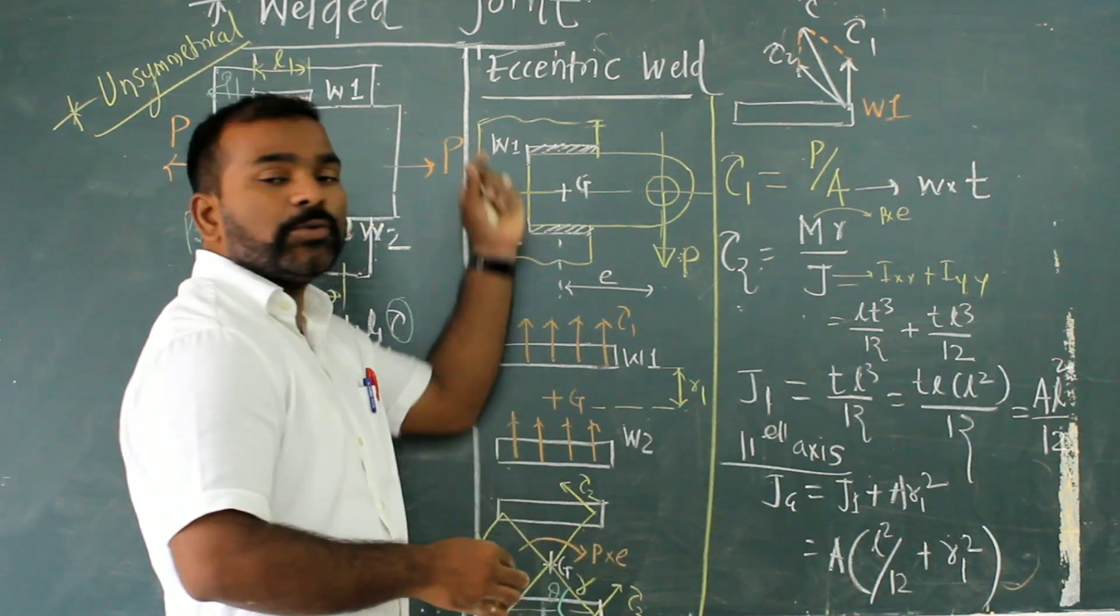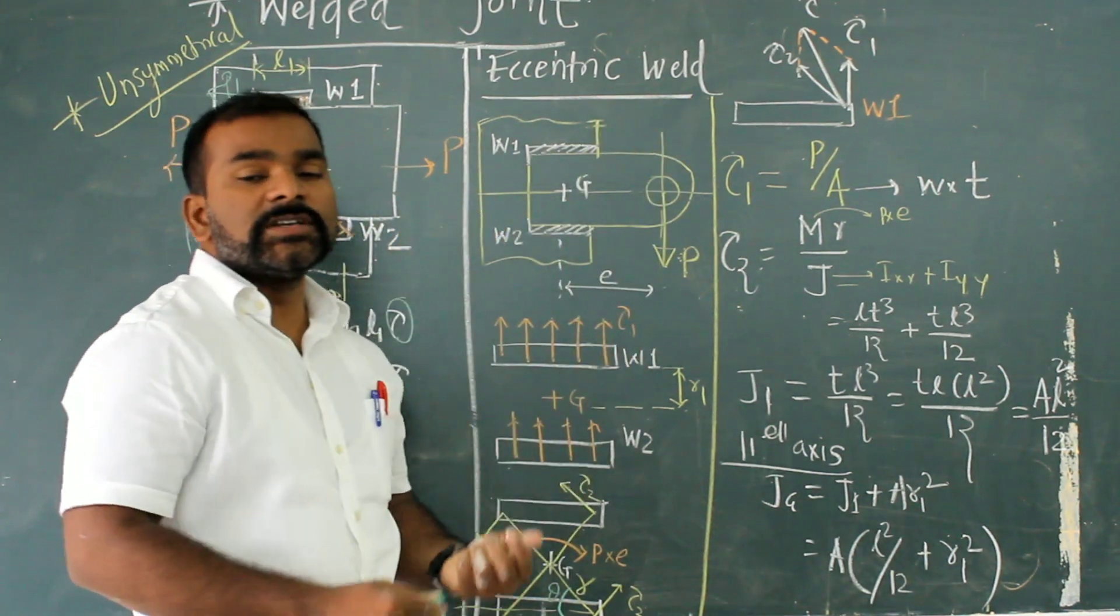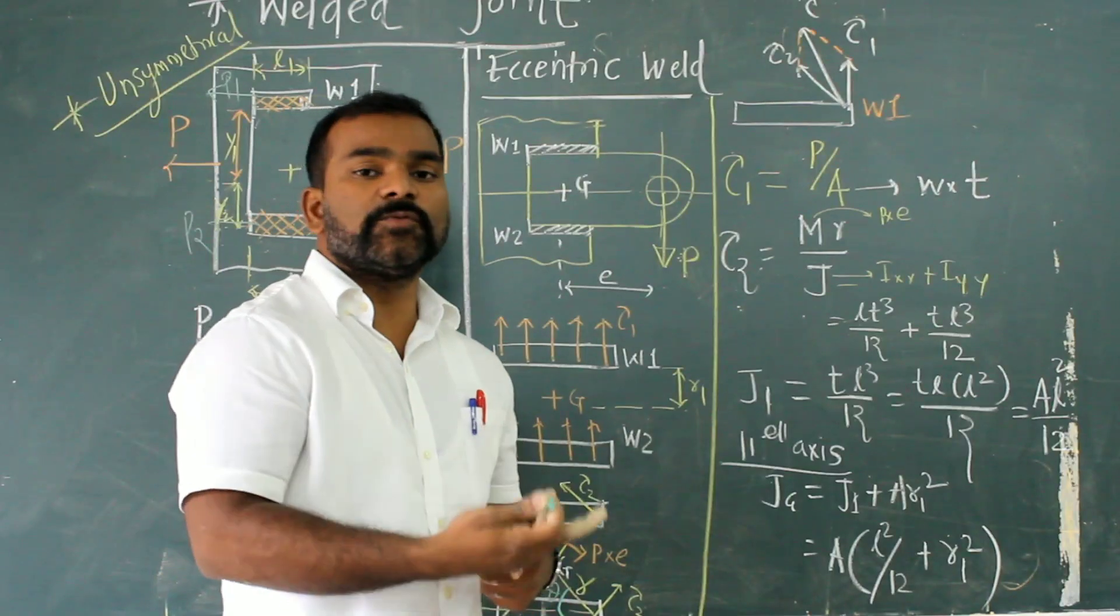Now, the second power point is related to eccentric weld. As we have seen in 3D joints, there are two kinds of forces: primary and secondary force.